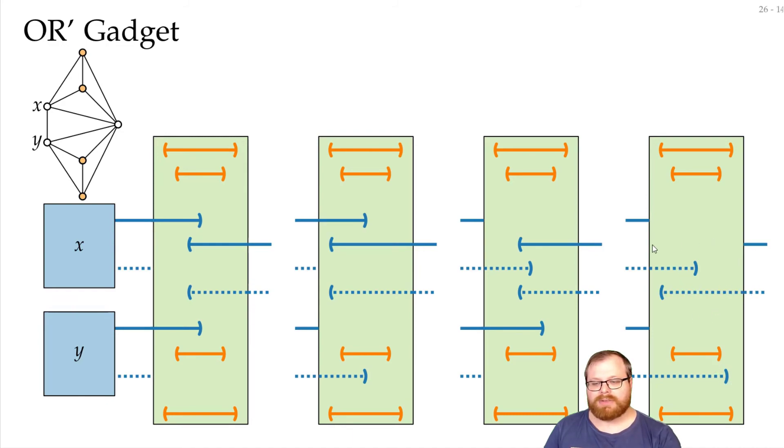But we cannot use the top one, because it would not block the visibility between X and this bar. There's not an edge inside here. So, this is forbidden. And that's exactly what we wanted. If both are false, then we cannot use the top. Otherwise we can use both. And now combining all the gadgets, we get our NP hardness.